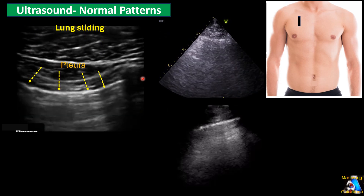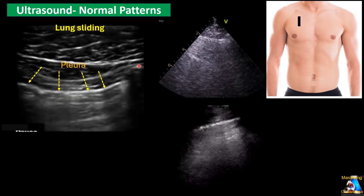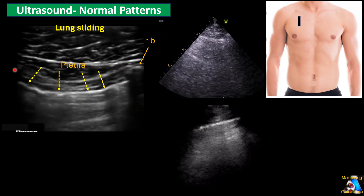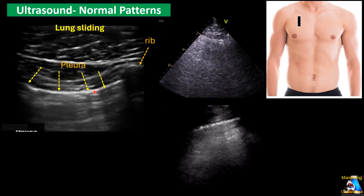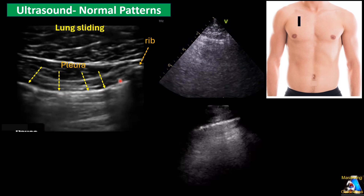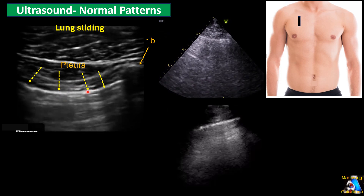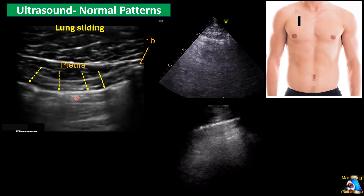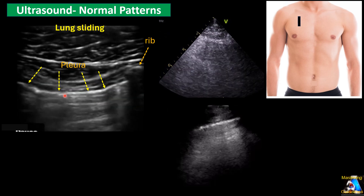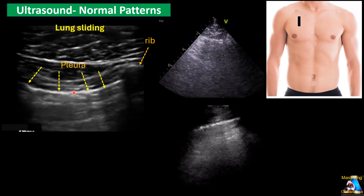We have other structures we can see here. The rib has a hyperechoic surface and posterior shadow. If our probe footprint is big enough, we can see another rib here, which gives us a face of the frog, or sometimes called the bat sign. The most important feature we can see is sliding of the pleura, which we call lung sliding or the sliding sign. This is a very important finding.